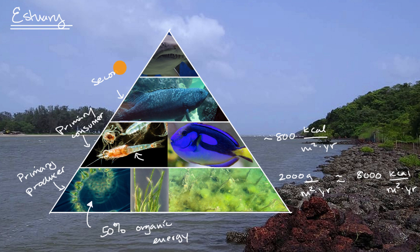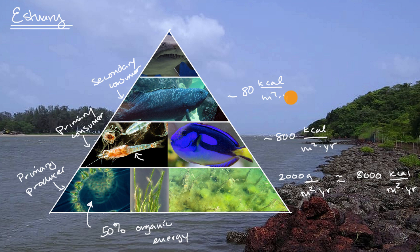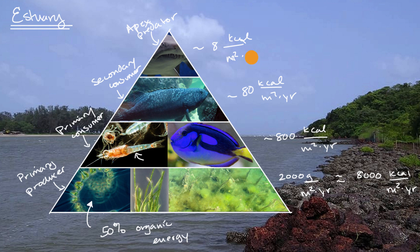The level above that we could call the secondary consumer. This is a grouper — marine ecosystems would be much more complex than this, but the net calories after the groupers live their lives, available to the level above, would be roughly 10% again — so maybe 80 kilocalories per square meter per year. And then at the top of this pyramid, we have an apex predator, a shark. What is available after the shark's done all of its business is roughly 10% of that — approximately 8 kilocalories per square meter per year.